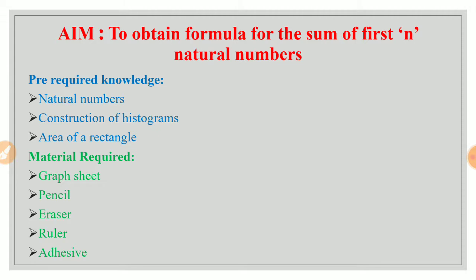The aim is to obtain the formula for the sum of the first n natural numbers. We need to know natural numbers, the construction of histograms and the area of the rectangle. The material required is the graph sheet, pencil, eraser, ruler, adhesive, colors, and scissors.